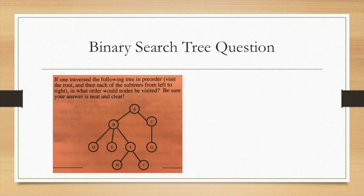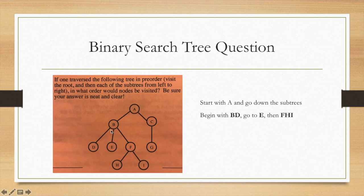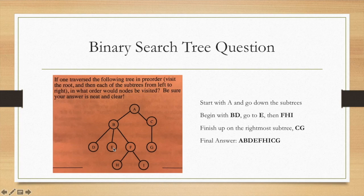So now we've got four questions covering different topics, though not all of them. Here's a pre-order question. You visit the root and each of the subtrees from left to right. So what order would the nodes be visited? To start with A, and then you go down the subtrees. So then you begin with B, D. Then it'll be E, and then it'll be F, H, I. And then at the end, you'll go to the right and you'll see C and G. So our answer is A, B, D, E, F, H, I. Come all the way back up: C, G.